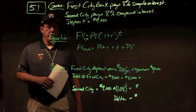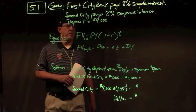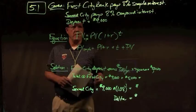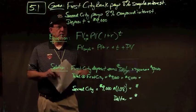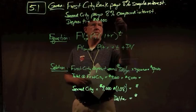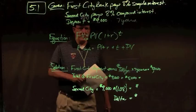Finance coach here with your solutions to chapter 5 problems. Problem 5.1: First Citibank pays 8% simple interest, Second Citibank pays 8% compound interest. Your initial deposit is $9,000. How much will you have in First Citibank at the end of seven years, and how much will you have in Second Citibank at the end of seven years?